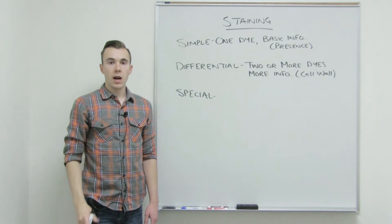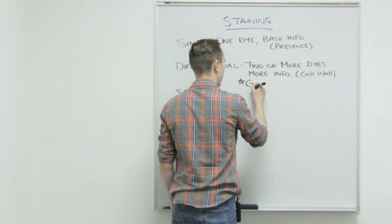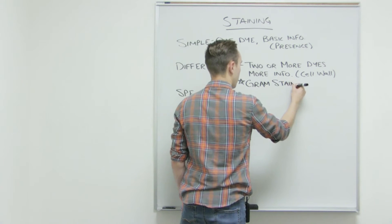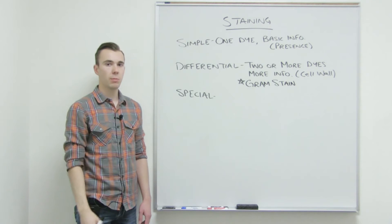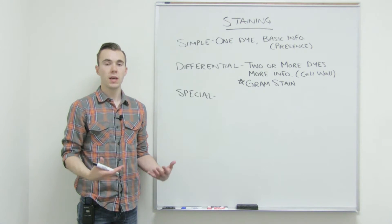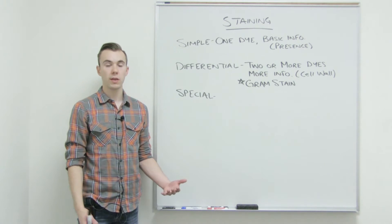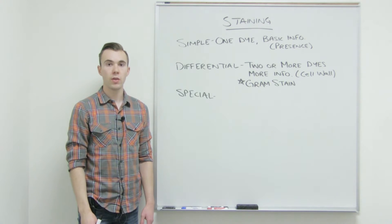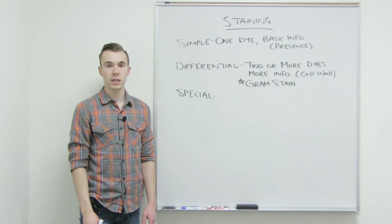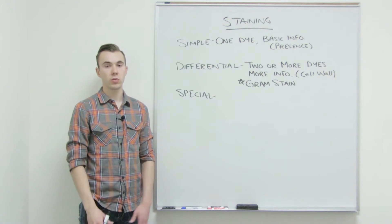When you think of differential stain, I want you to automatically think gram stain. And when you hear gram stain, I want you to automatically think differential stain. The gram stain is the biggest example of a differential stain and is most widely used. The gram stain is allowing us to see the cell wall composition. Hence, we have the two classes of bacterial cell walls, gram positive and gram negative. I would encourage you to go view the other video, labeled gram stain, in order to get an in-depth knowledge of this staining process. But for right now, I just want you to make the connection that gram stain is a differential stain.